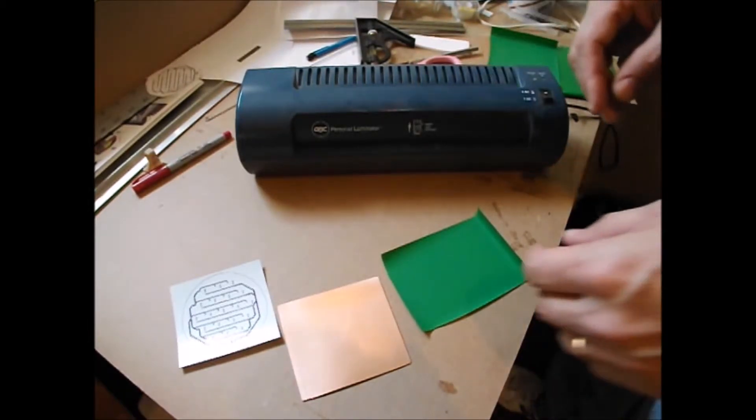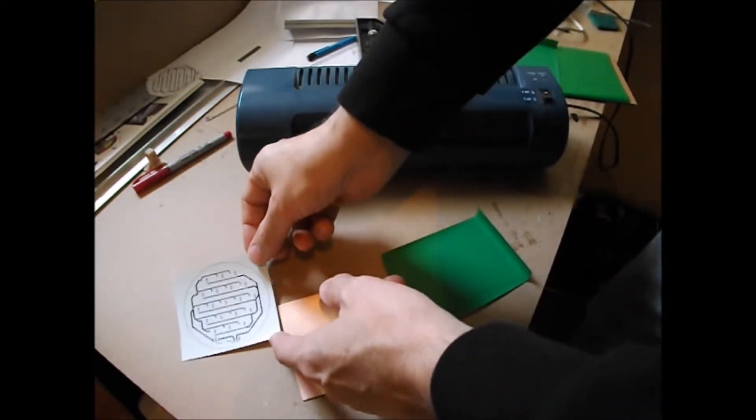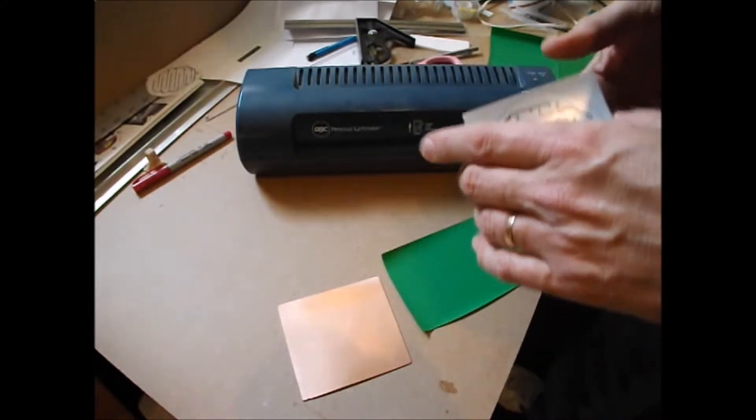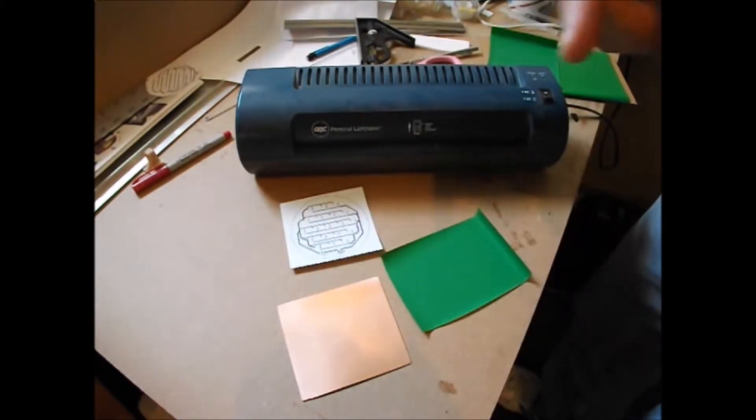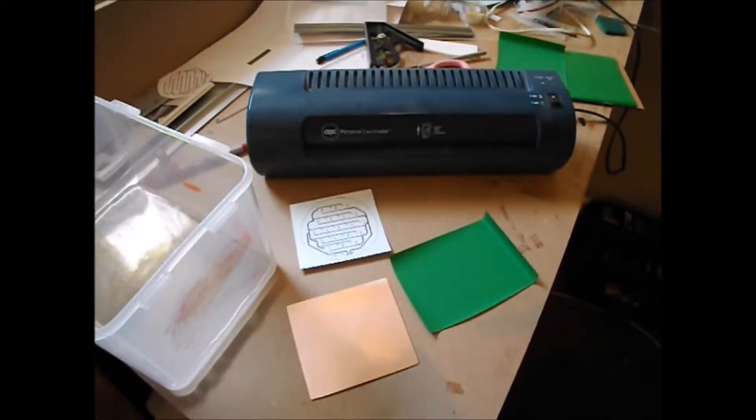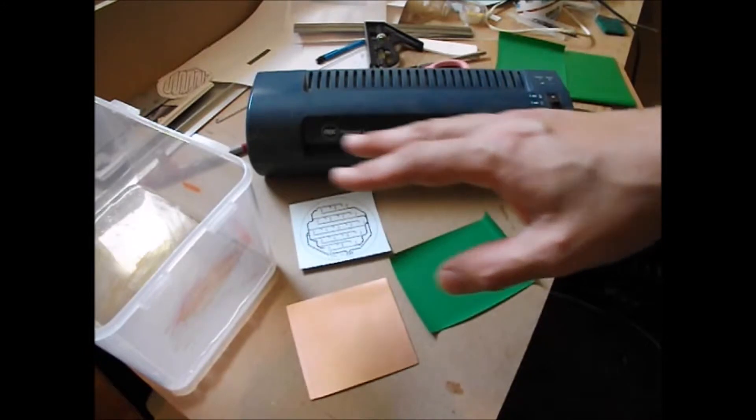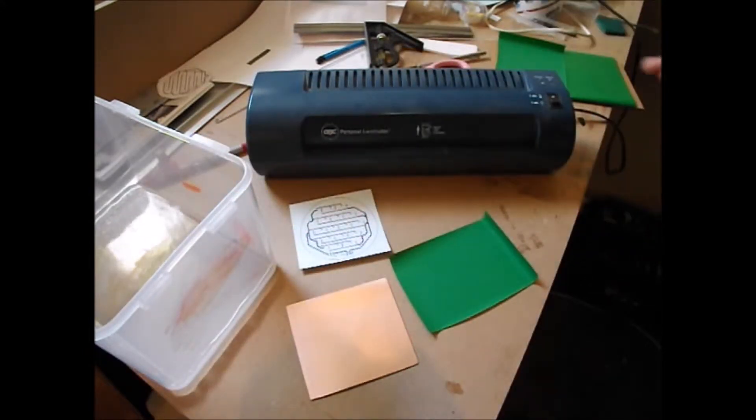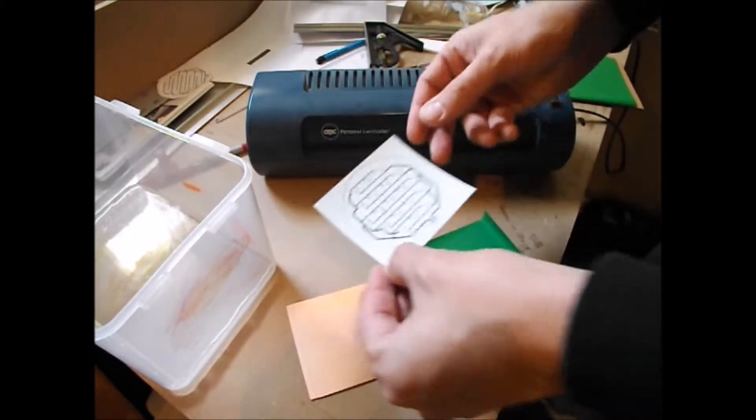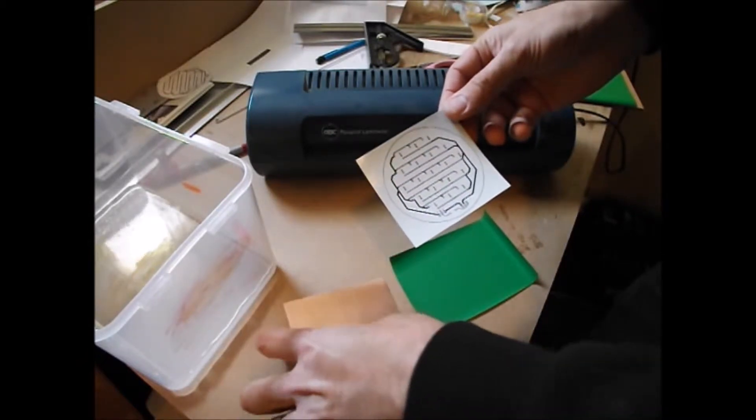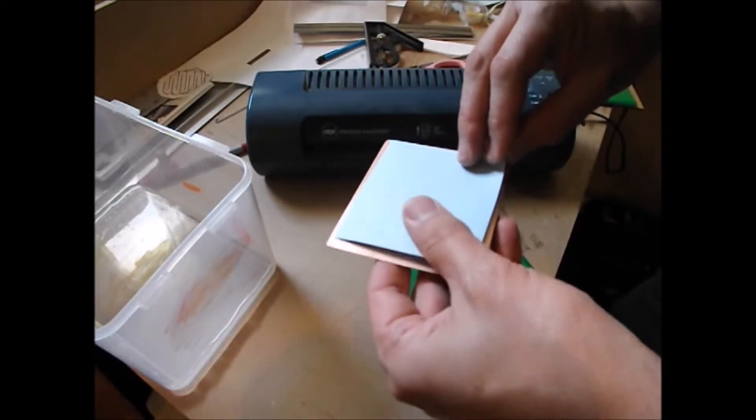We're back and the laminator is all heated up and we're going to run the circuit print and the copper clad through the laminator to transfer the toner. I forgot one thing. I've got to go get some water because the lamination has got to go in there as soon as it comes out of the laminator while it's still hot. Now I've got my container of water. So we take the circuit print and our nice clean copper clad and put them down together.